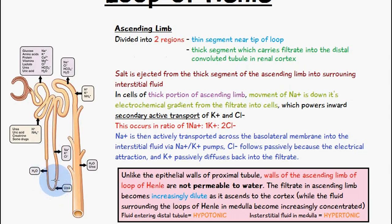We can divide the loop of Henle into the ascending limb, which goes up, and the descending limb, which goes down. To begin this video on the loop of Henle, we're going to talk about the ascending limb first.